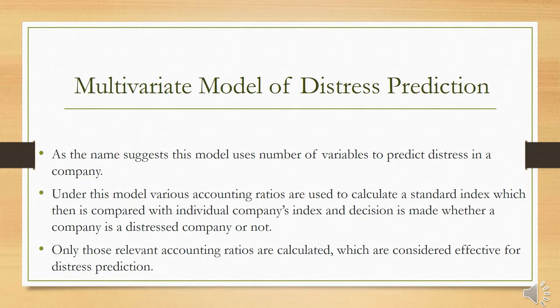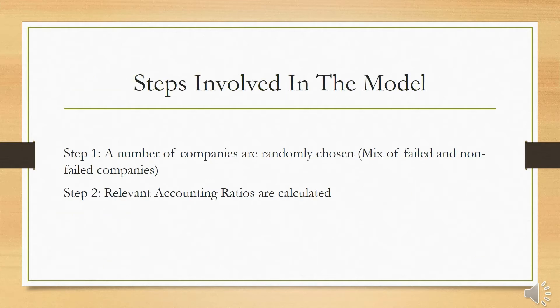As the name suggests, this model uses a number of variables to predict distress in a company. Under this model, various accounting ratios are used to calculate a standard index which then is compared with individual company's index, and a decision is made whether a company is a distressed company or not. Here in this model, only those relevant accounting ratios are calculated which are considered effective for distress prediction. Now when we know the basic premise of this model, we move on to the steps which are involved in this model.